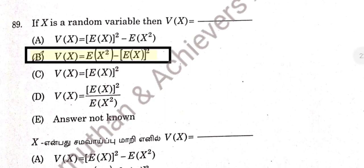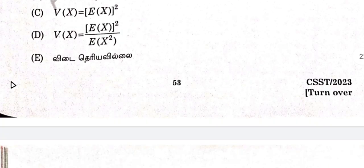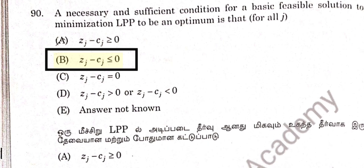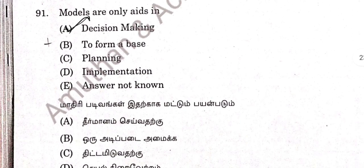Question 89: If x is a random variable, then variance of x is E of x minus E of x whole square. S is a sufficient condition. Basic feasible solution — for minimization problem, ZJ minus CJ less than or equal to 0; for maximization, ZJ minus CJ less than or equal to 0. Question 90: Option B is correct.